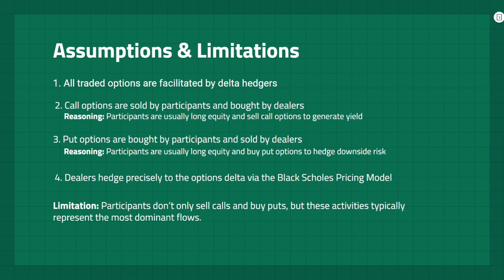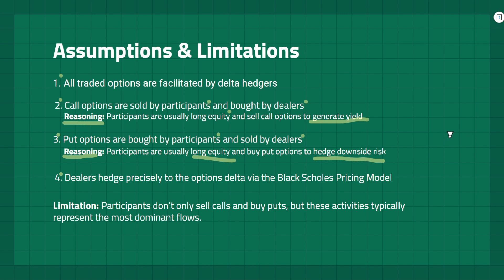In order to generate this data, there are a few assumptions we have to make. Number one, all traded options are facilitated by delta hedgers. Number two, call options are sold by participants and bought by dealers — reasoning is that participants are usually long equity and they sell call options to generate yield. Number three, put options are bought by participants and sold by dealers — reasoning is participants are usually long equity and they buy puts to hedge downside risk. Number four, dealers hedge precisely to the options delta via the Black-Scholes pricing model. The major limitation here is that participants don't only sell calls and buy puts; however, these activities do represent the most dominant flows in the market.